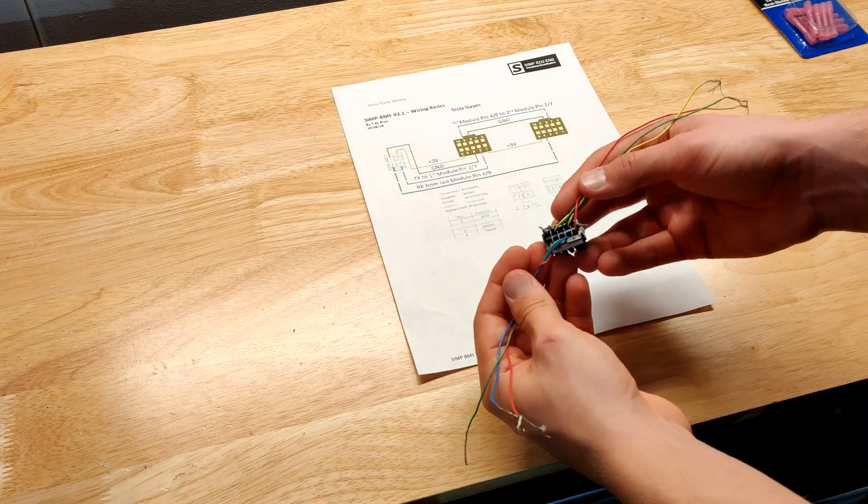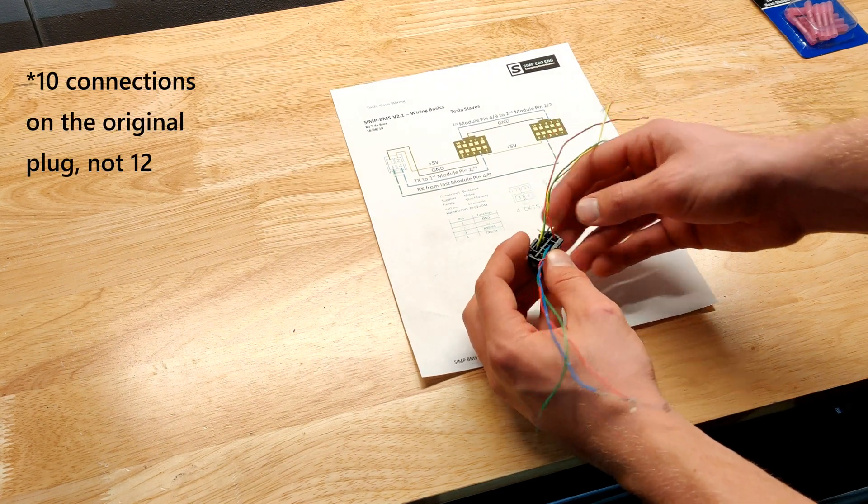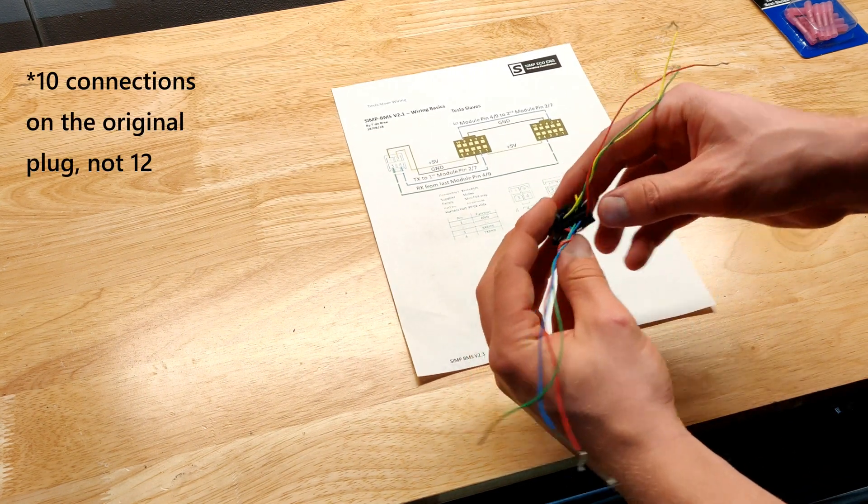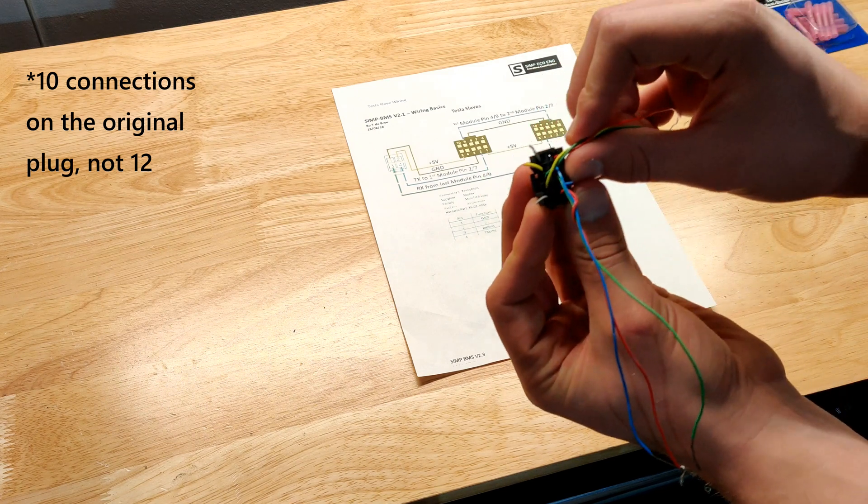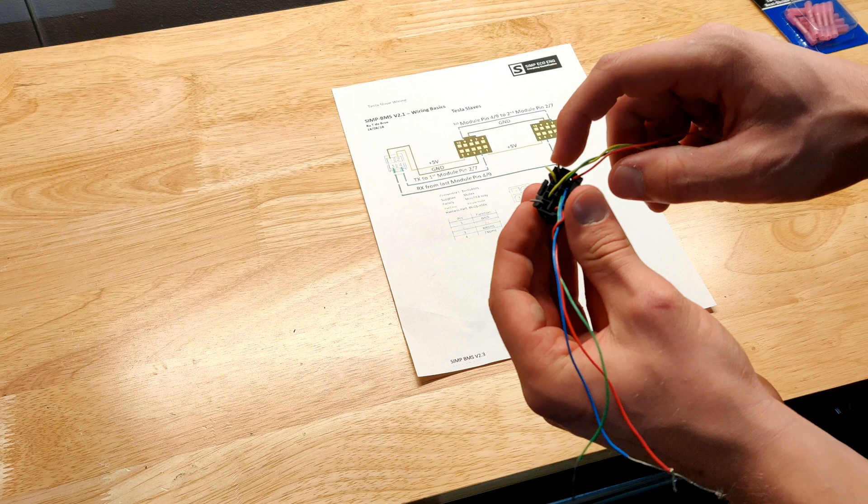On each one of the module connectors you'll only be using 6 out of the 12 connections that the original plug has. So you can just cut away all the excess wires, which is what I did. You can see these wires have all been trimmed down because they're not needed.